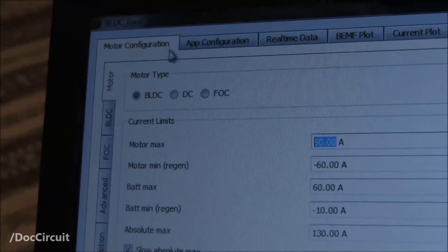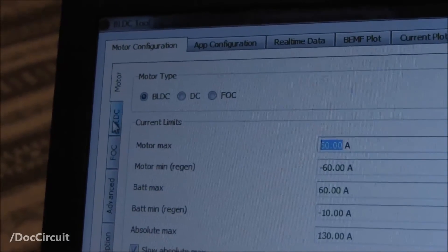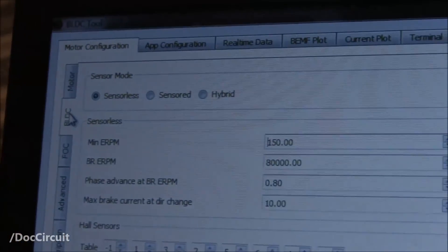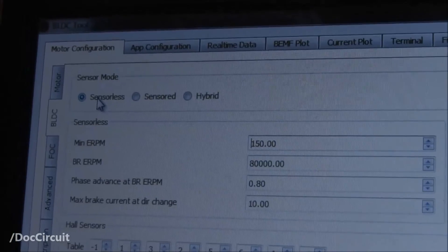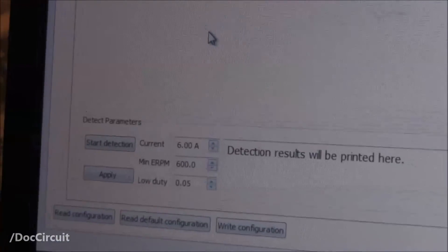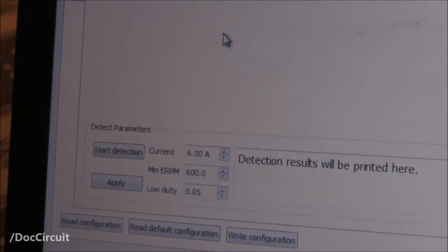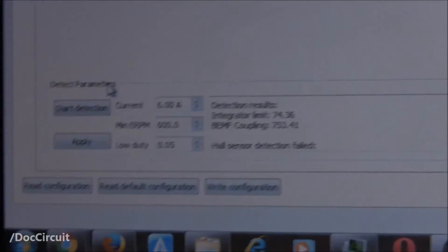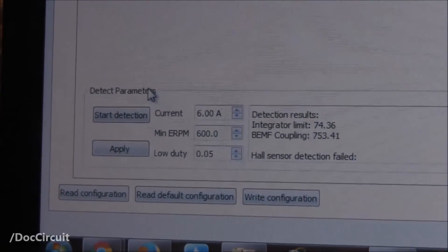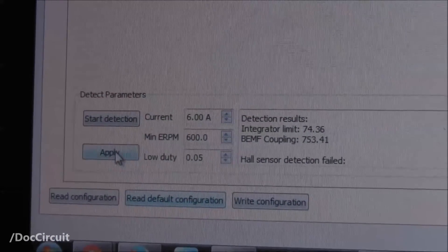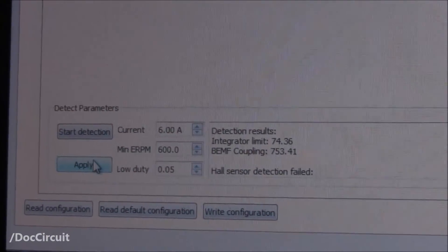After you've configured the motor BLDC options, go to BLDC itself, obviously sensorless. You'll need to detect parameters. So if you go to start detection, the motor will do the following. Which will give you some values to enter. If you do apply, that's that side of it done.